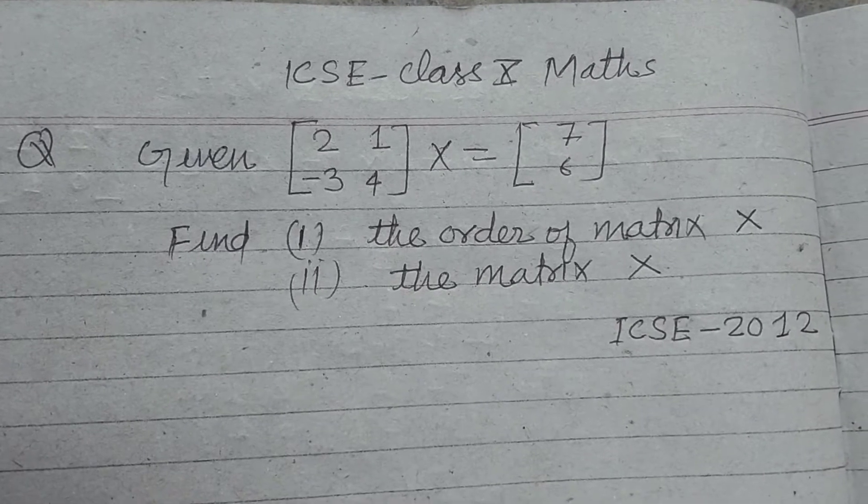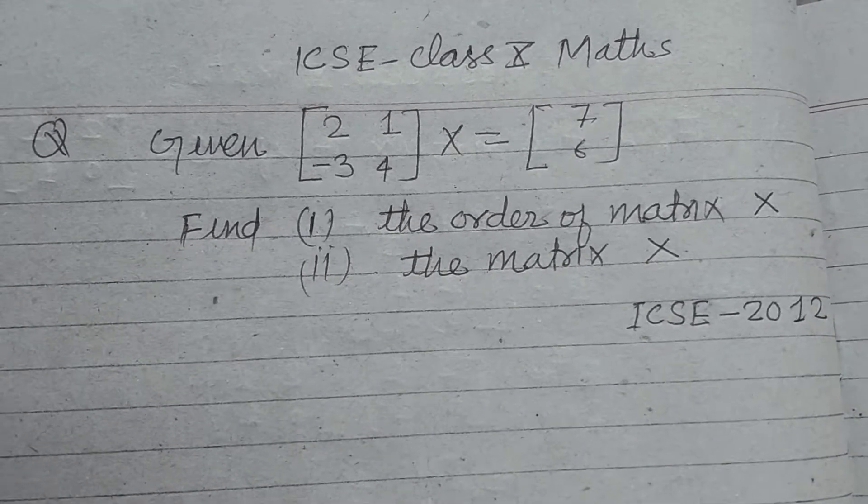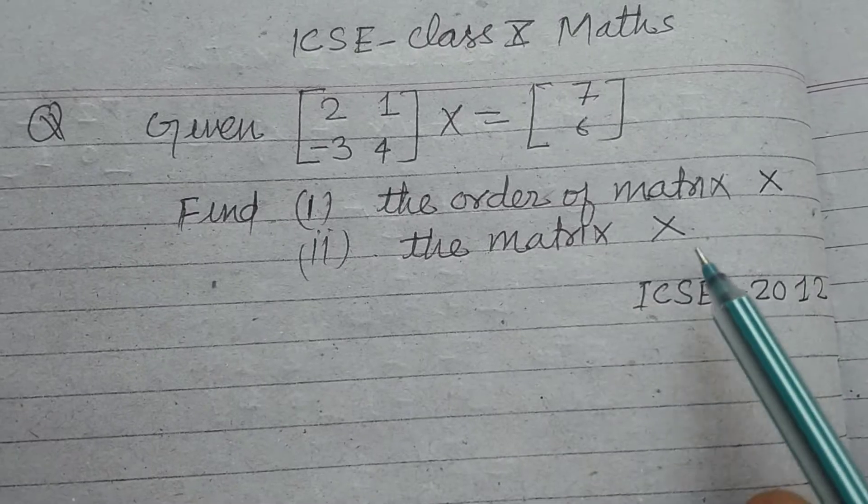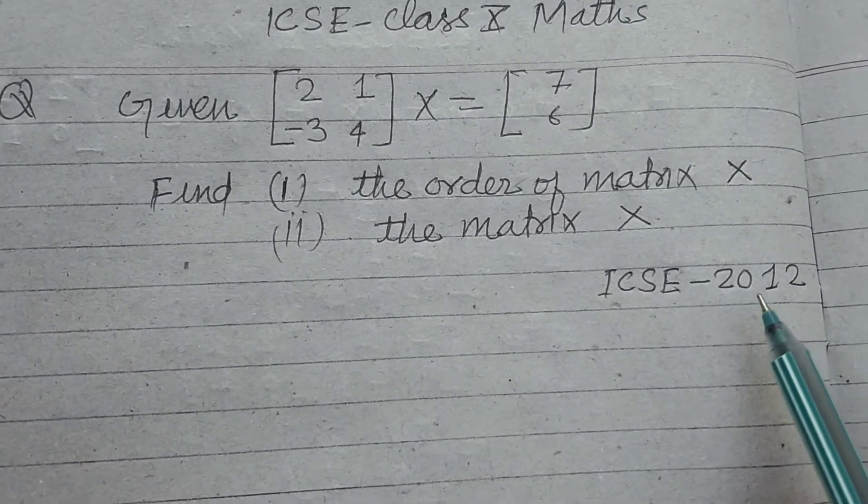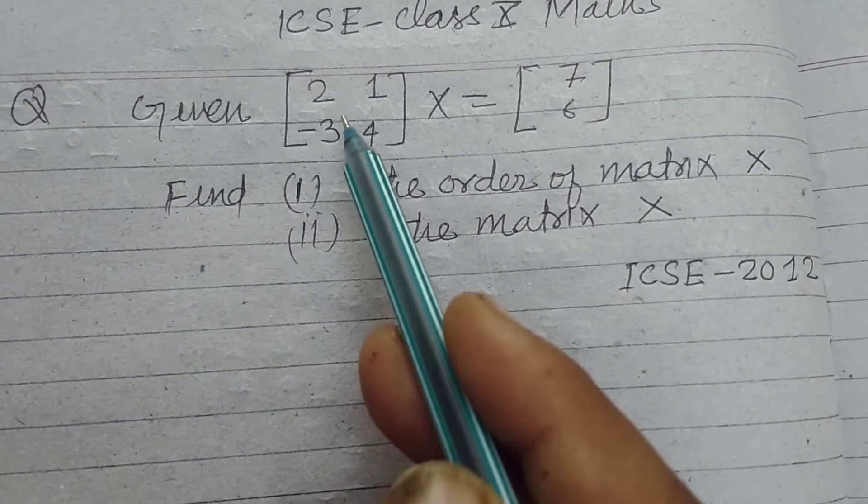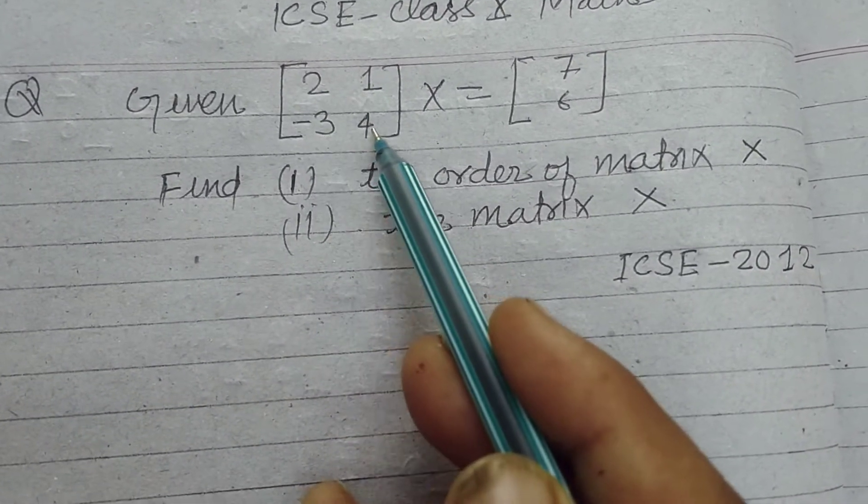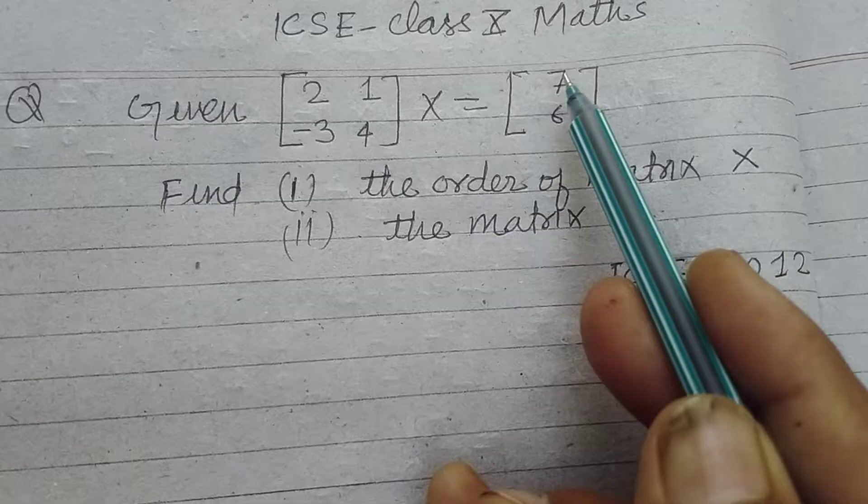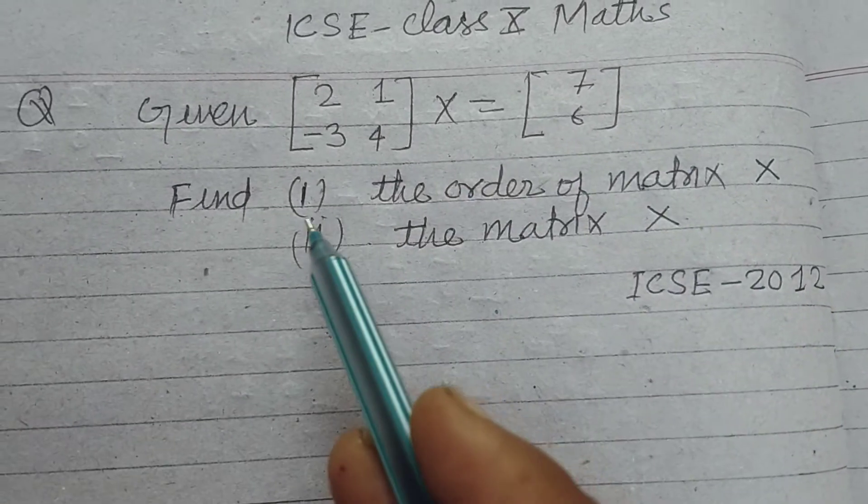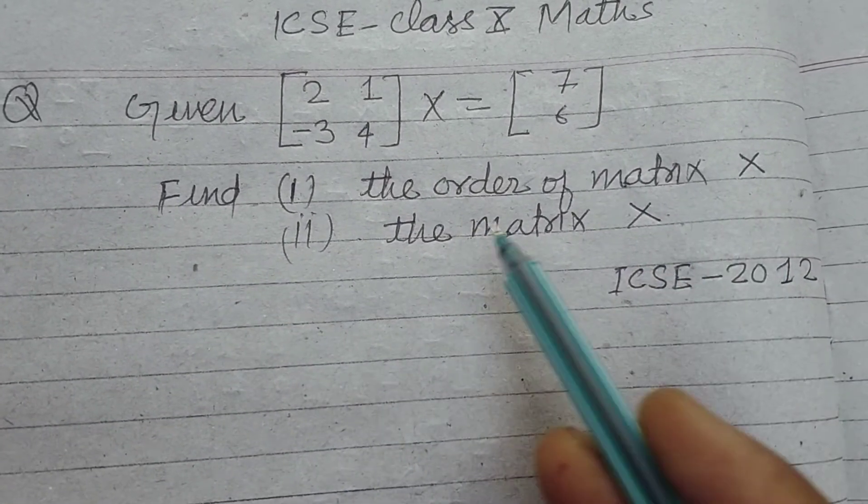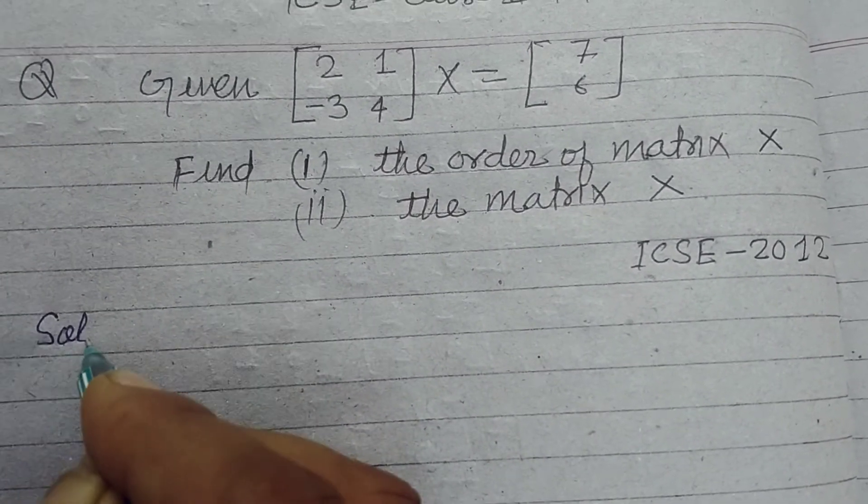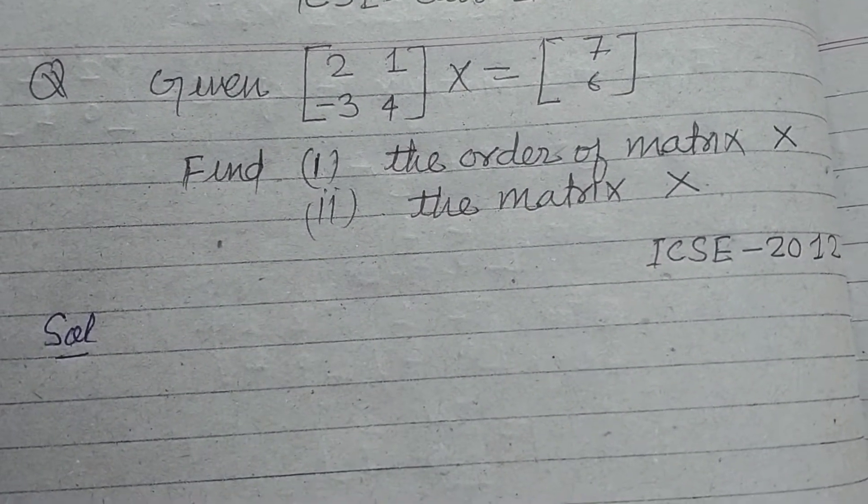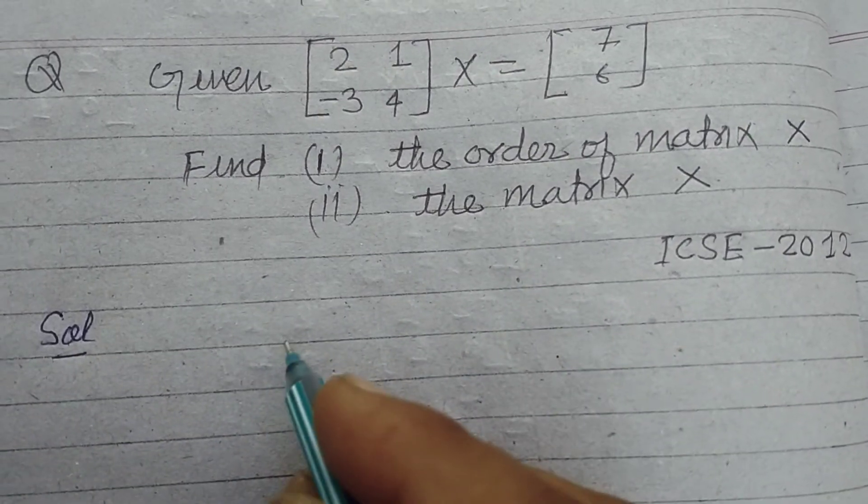Hello students, warm welcome to this YouTube channel. This is a question from ICSE class 10 math on matrices, asked in the 2012 board exam. Given the matrix [2, 1; -3, 4] times X equals [7; 6], find the order of matrix X and the matrix X itself. So students, here we want to find out the order of the matrix.